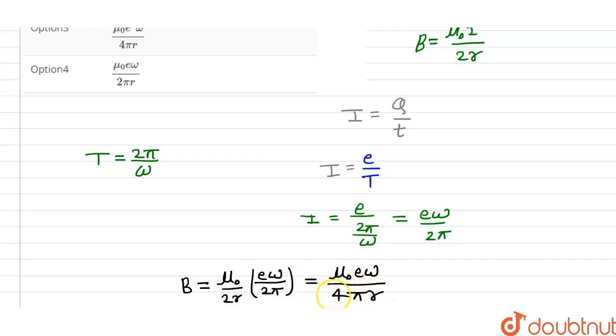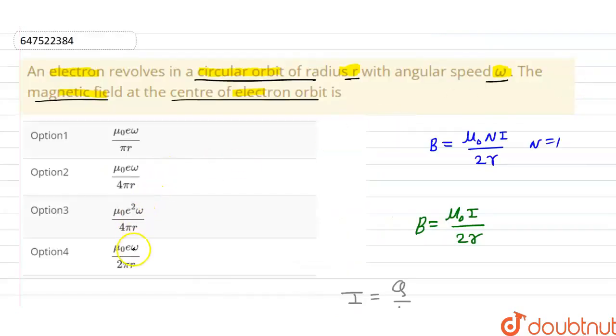So the magnetic field value at the center. That means you can see that option 2 is your correct answer: μ₀eω divided by 4πr. So option 2 is your correct answer. Thank you.